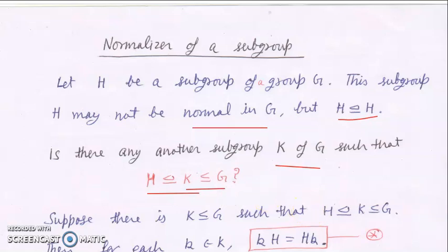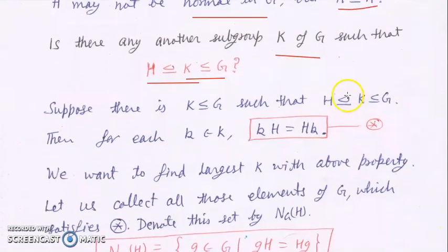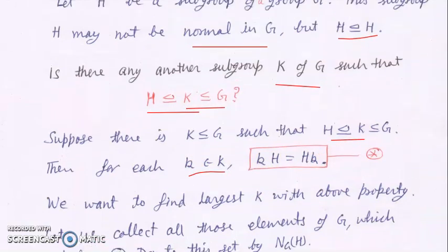Suppose there is such a K. What will be the property of that K? By definition, since H is normal in K, we have kH = Hk for all k in K. One thing you can see is that there is always at least one such K, and that K is H itself. Because if you replace k by elements of H, this property holds. So at least one K exists with this property.